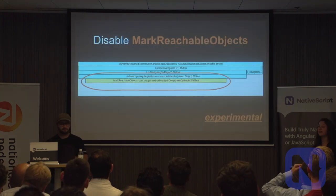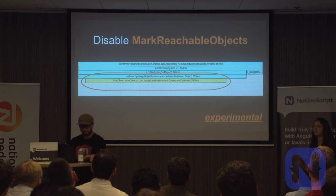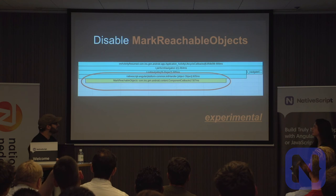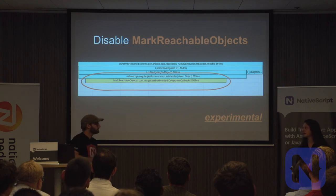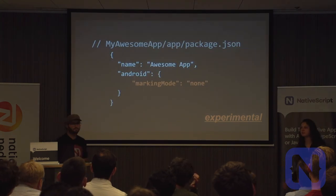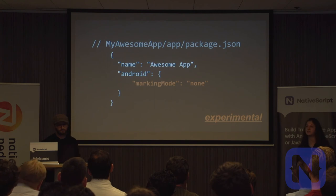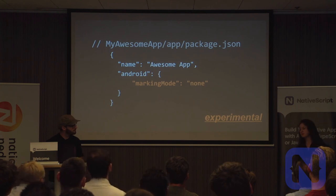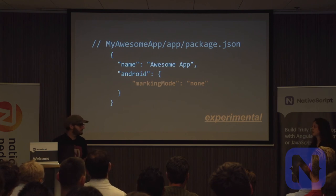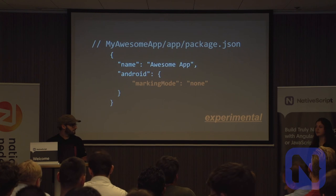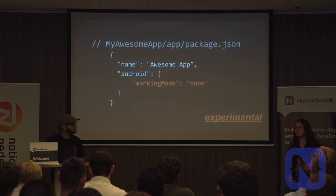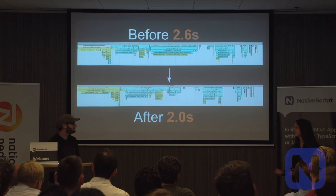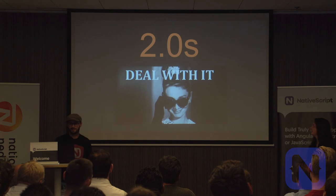There's one more thing: optimizing the garbage collection process. You can disable the mark-reachable objects step by providing a single key in your app package.json — 'markingMode: none'. This is experimental but may become default in later versions; you can play with it in your apps using the latest version of NativeScript — 3.1. There's also a cool blog post in the resources. When we disable the mark-reachable objects, we get a startup time of two seconds on a four-year-old phone.